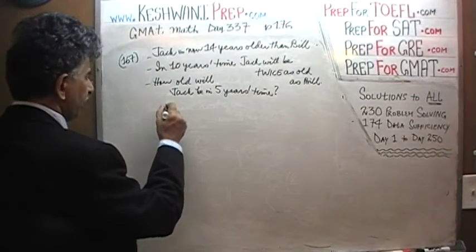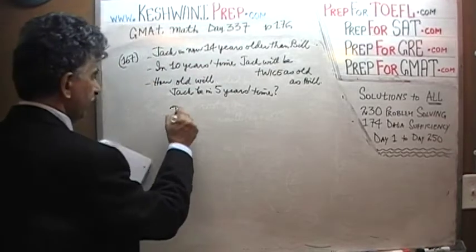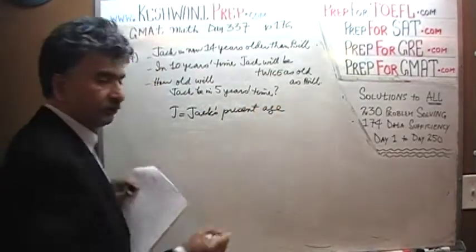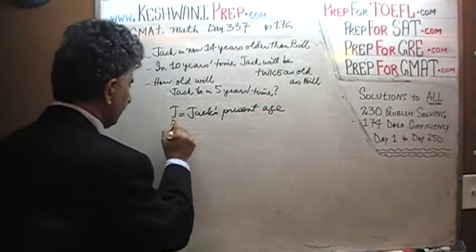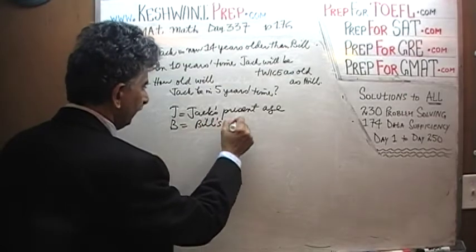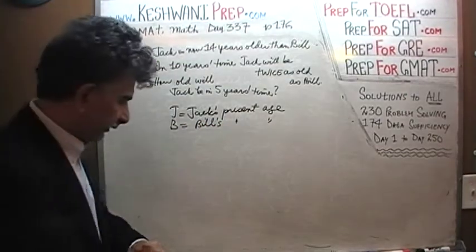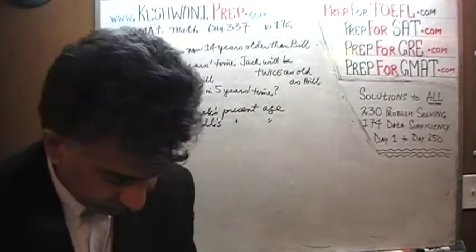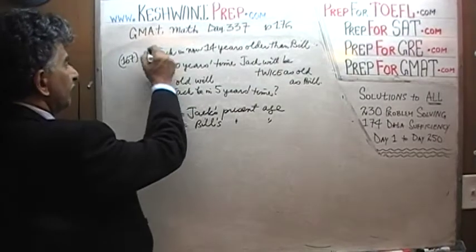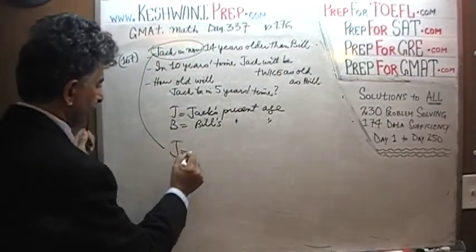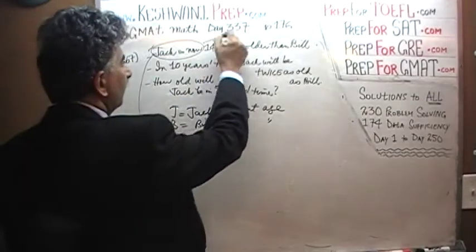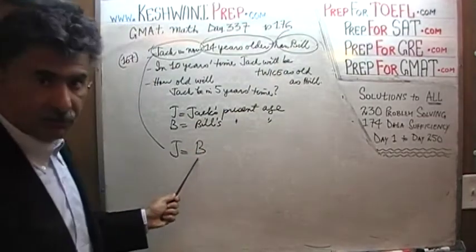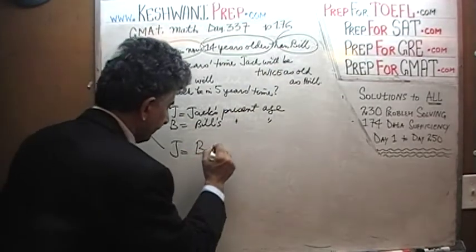Let's use letter J to represent Jack's present age — his current age. Similarly, we will use B to represent Bill's present age. Let's see what the first sentence tells us and if we can get an equation out of it. The first sentence tells us that Jack is now — J — that is Jack's present age — is 14 years older than Bill. So whatever Bill's age is, Jack is going to be 14 more than that. So that's the first equation.